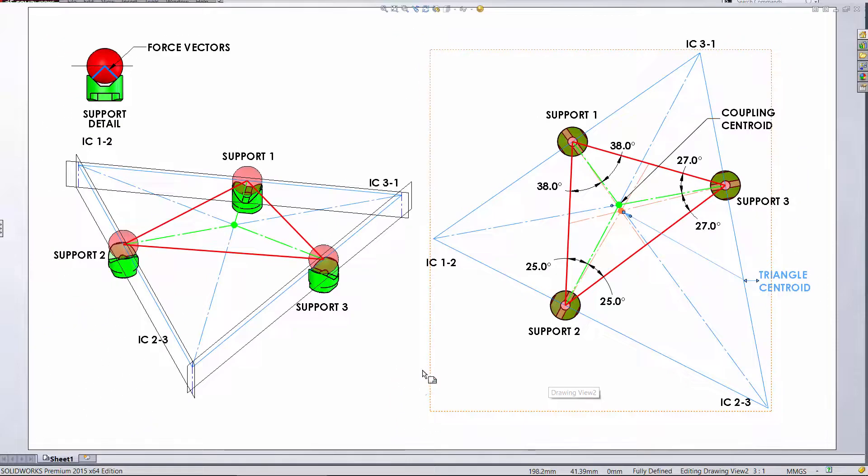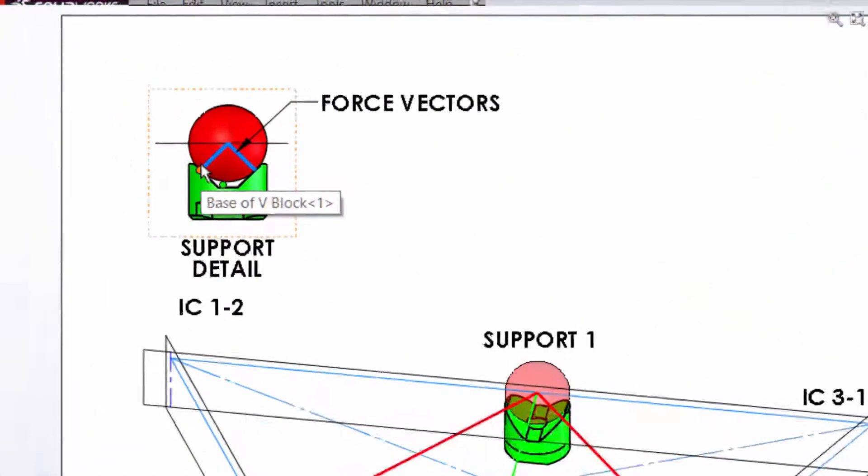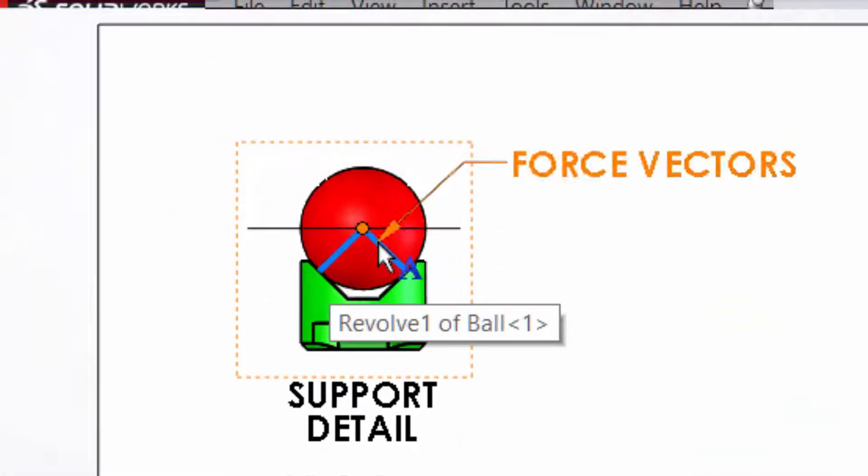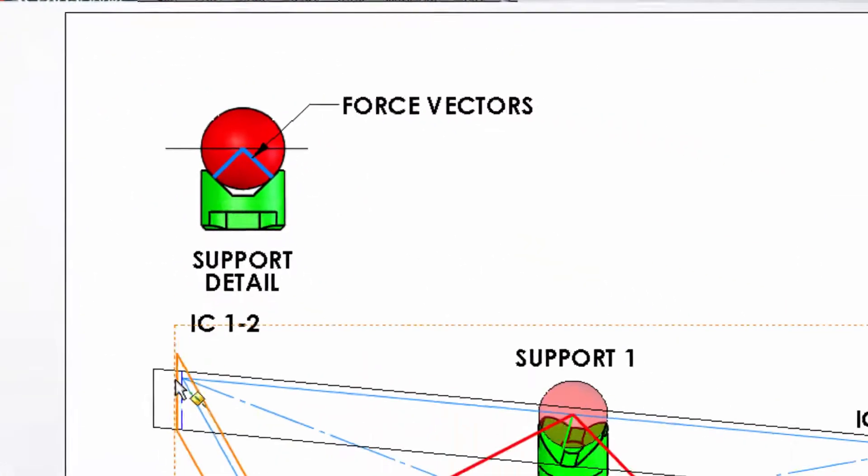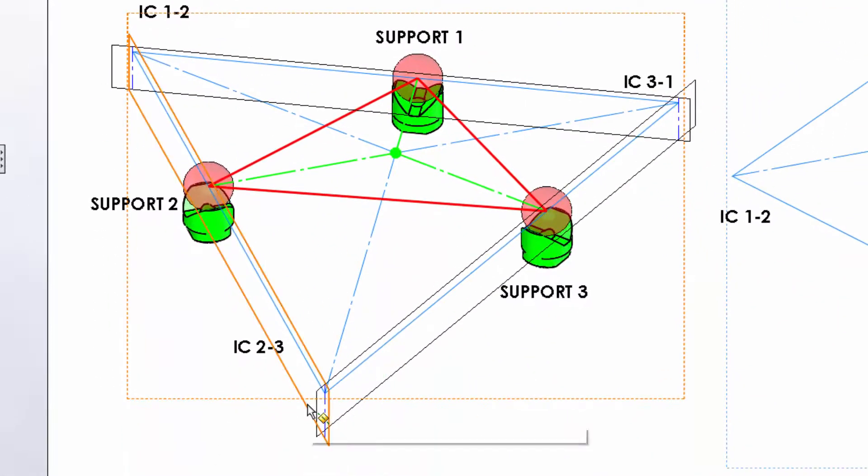To fully understand the kinematics of the mount and the benefits of the Maxwell criterion, we also need to define instantaneous centers of rotation for each pair of supports. Each ball in V has two force vectors that intersect at the center of the ball defining a plane. So we have three planes with three intersections defining three axes which are the instantaneous centers of rotation.